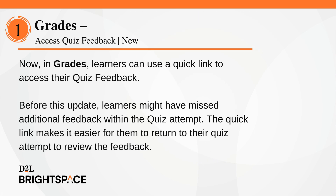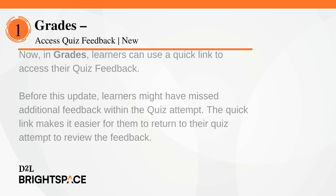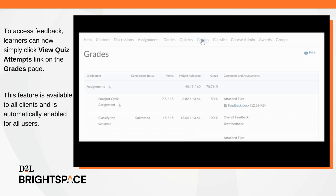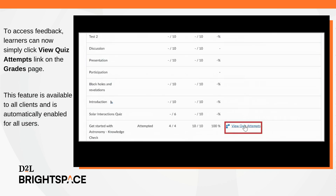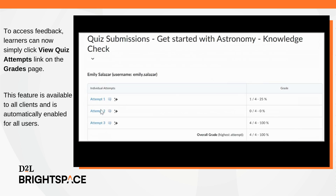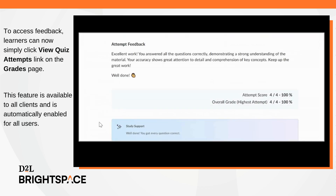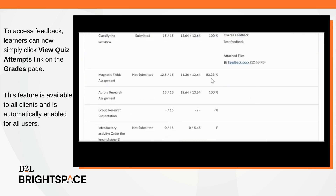In grades, learners can now quickly access their quiz attempt feedback through a quick link back to their quiz attempts. Before this update, learners might have missed additional feedback within the quiz attempt. The quick link makes it easier for them to return to their quiz attempt to review the feedback. Learners can now click the View Quiz Attempts quick link on the Grades page. It's a seamless experience that saves time and enhances the learning process. This feature is available to all clients and is automatically enabled for all users.